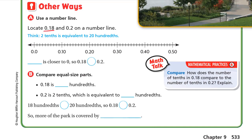Another way is to use the number line. We look at 0.18 and 0.2. If this is zero hundredths and this is ten hundredths and this is twenty hundredths, then 0.18 is before the 20 hundredths mark. Two tenths is the same as 20 hundredths — the zero doesn't change the value — so 0.2 is at the 20 hundredths mark. Since 0.18 is closer to zero, 0.18 is less than 0.2. The further from zero, the bigger the number.